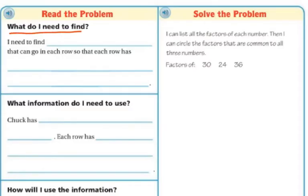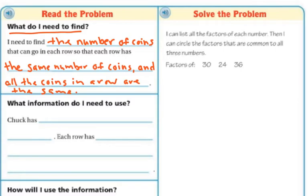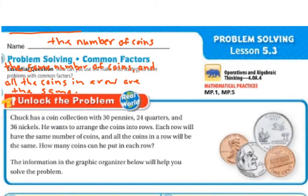So what do I need to find? I need to find the number of coins that can go into each row, so that each row has the same number of coins, and all the coins in each row are the same. I get that from going back in the problem — it says he wants to arrange them into rows, each row will have the same number of coins, and all the coins in each row will be the same.